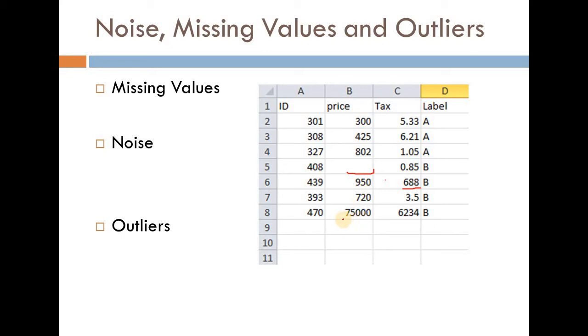An outlier can be considered as an instance represented by a row that has got problems with most of its features. Like over here we have a value for price that is very much different from the rest of the values and same goes for the values for the tax column.